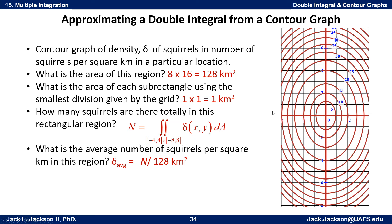From negative 4 to 4, that's 8 wide. And 8 minus negative 8 is 16 tall. That multiplies together to be 128 square kilometers. Each one of these is a one-by-one square, so each sub-rectangle has an area of one square kilometer.